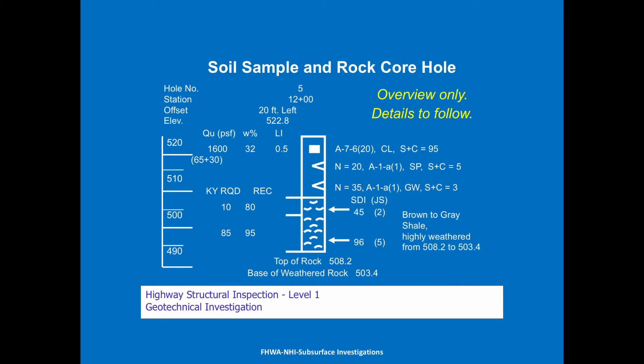So what do we need to know for geotechnical investigation? You're going to need to know about soil samples and rock cores. You're going to see these on your geotech plans for your bridge job, and you need to be able to interpret them. What are those N values? What is that CL, QU, LI, or a Kentucky RQD? Through this session, we're going to walk through these, show you where to find them on the plans, and tell you what they mean.